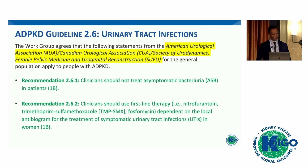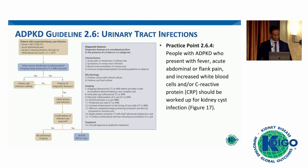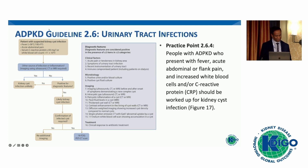Moving on to urinary tract infections. The KDIGO guidelines follow recommendations made by other bodies. We should not treat patients with asymptomatic bacteriuria. First-line antibiotics are dependent on local results and the prevalence of multi-resistant organisms, so local practice should be followed in terms of antibiotic choice. The following diagram illustrates a flow diagram discussing urinary tract infections and the approach to management.